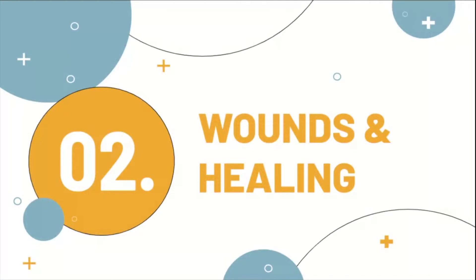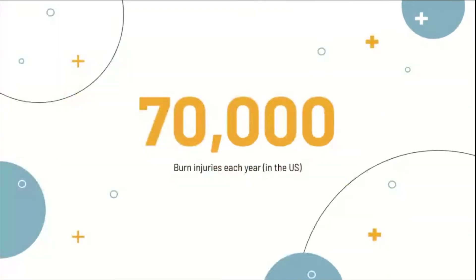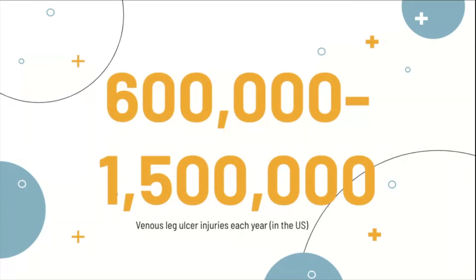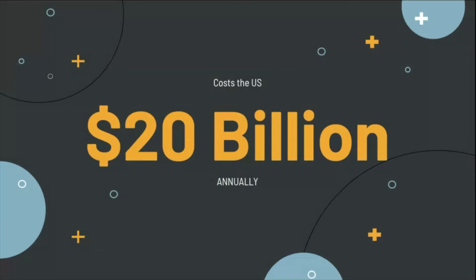To get into wounds and the wound healing process, there are about 70,000 burn injuries each year in the US alone, and 600,000 to 1,500,000 venous leg ulcer injuries each year in the US. These come from poor circulation in the leg veins that can damage the skin and make it very fragile. All in all, this costs the US $20 billion annually, considering all sorts of treatments including closure of the wound, pain relievers, possible surgery, prevention of infection, and of course, skin grafts.